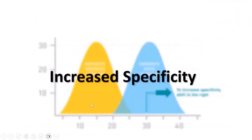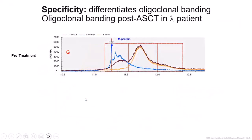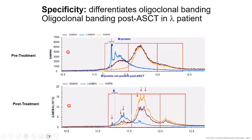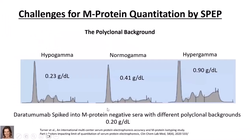We also get increased specificity. Here's a patient whose myeloma cells only made a lambda light chain — their M protein before autologous stem cell transplant. Post-treatment, as the bone marrow is destroyed and repopulates, many IgG lambda and IgG kappa clones appear. But looking for the original malignant clone by mass, this patient has none in the same mass range — a real benefit of the assay.